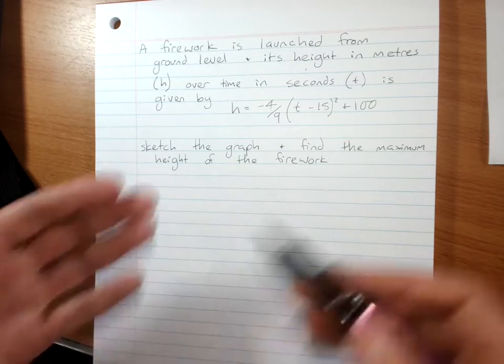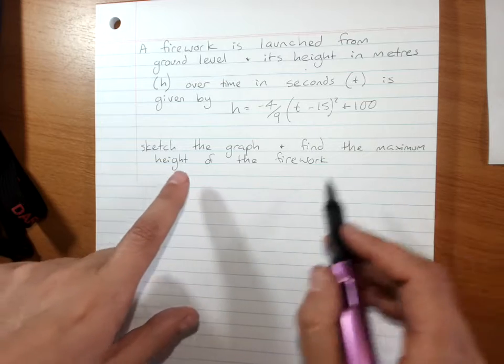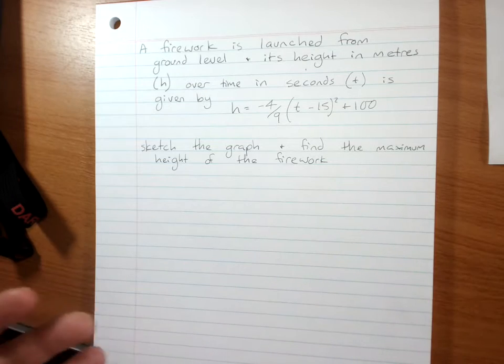And various aspects of the movement of the object are given. So the maximum height of the firework will be given at the turning point.